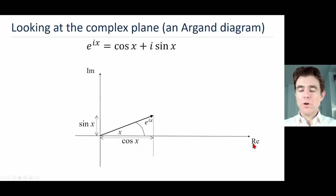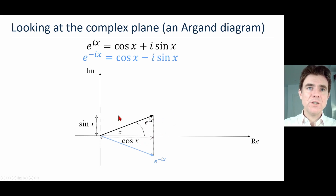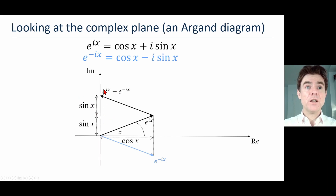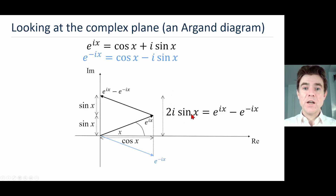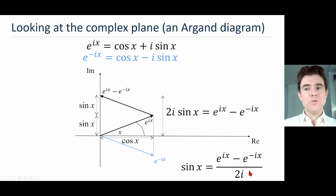Likewise for the sine: we do e^(ix) minus e^(-ix). Subtracting e^(-ix) means going in the negative real direction, and then the negative of the negative imaginary part goes positively upward on the imaginary axis. We end up with a net direction only on the imaginary axis of 2 sin x — which is the imaginary coefficient equal to that expression. This rearranges to give: sin x = (e^(ix) − e^(−ix)) / 2i.